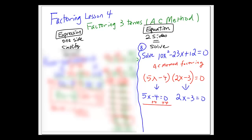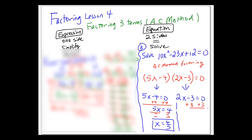For the first equation, add 4 to both sides to get 5x equals 4, then divide both sides by 5, giving x equals 4/5. For the second equation, add 3 to both sides to get 2x equals 3, then divide both sides by 2, giving x equals 3/2. So we have two solutions.